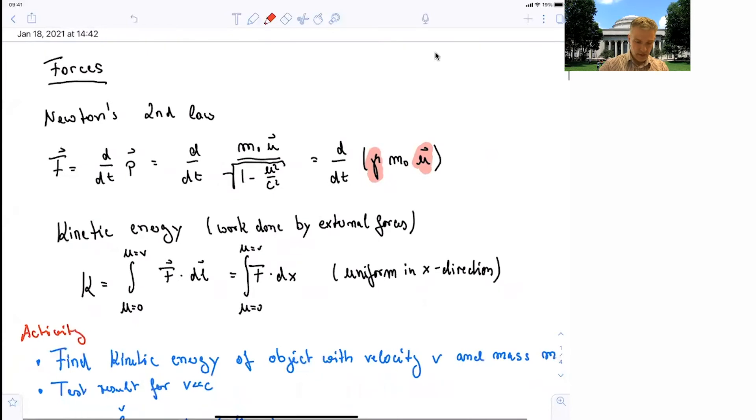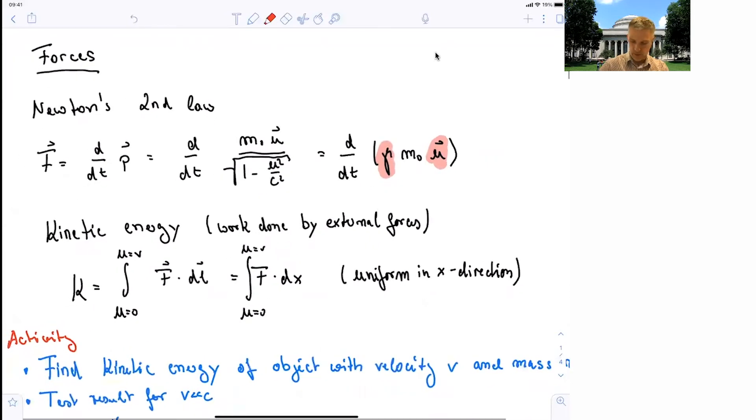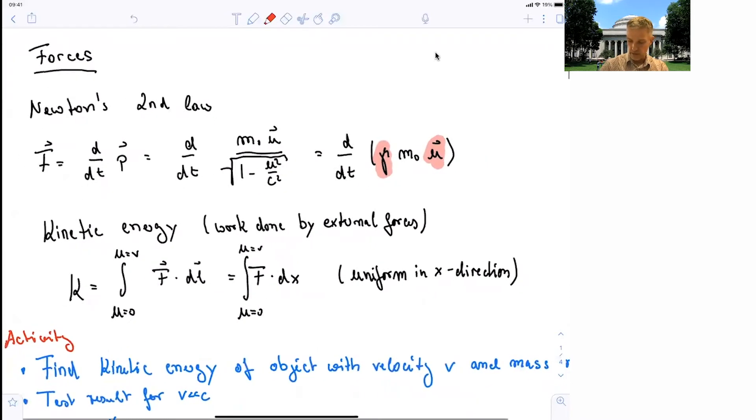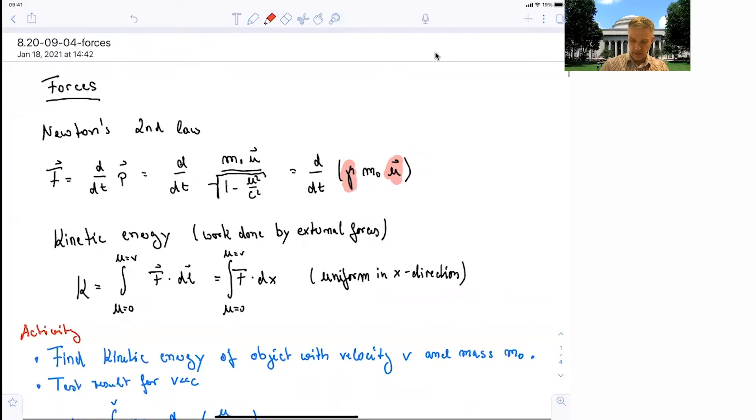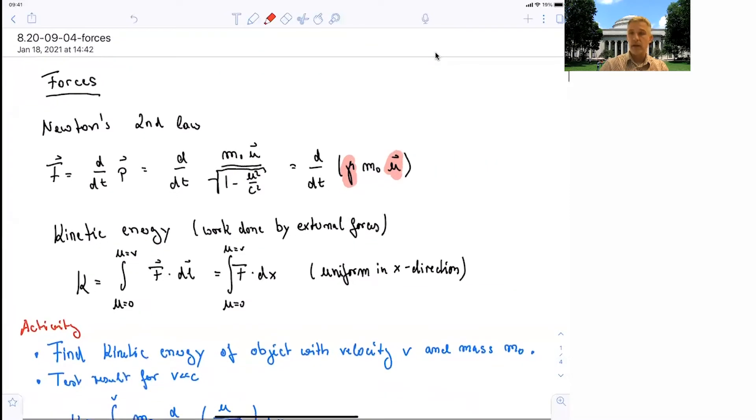So as the first activity, I want you to find the kinetic energy of an object with velocity v and the mass m0. And as a second part, I want you to test this result for velocities much smaller than the speed of light, where you're used to doing this kind of calculation and you're familiar with the outcome.